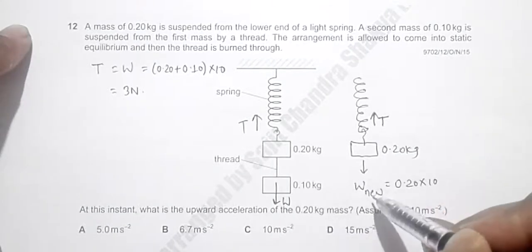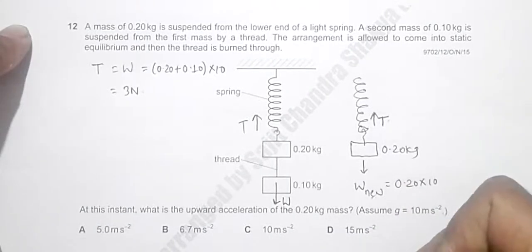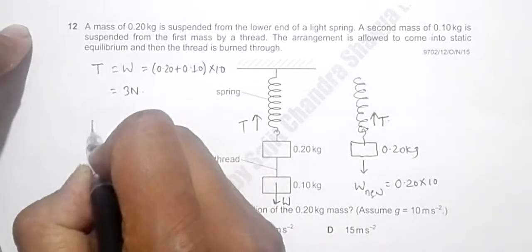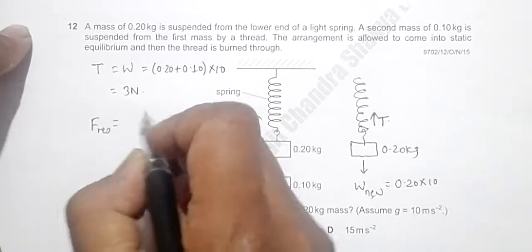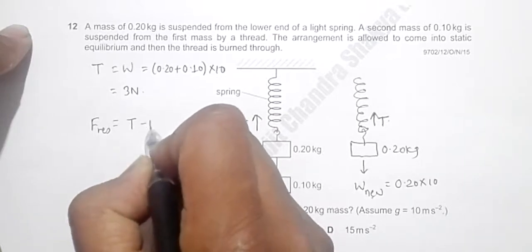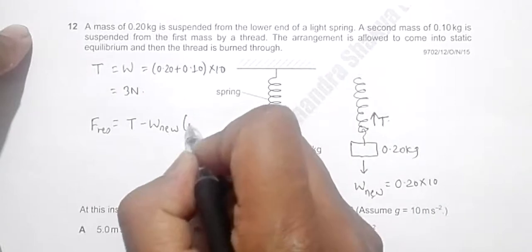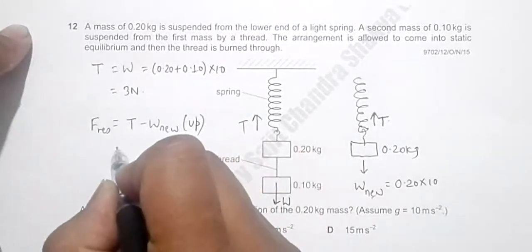So therefore after this happens, the resultant force is equal to T minus W_new, which will be in upward direction.